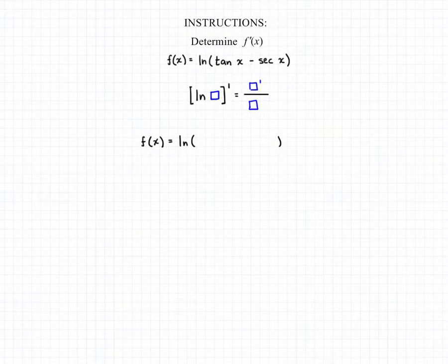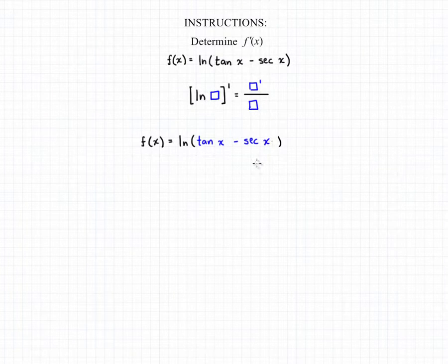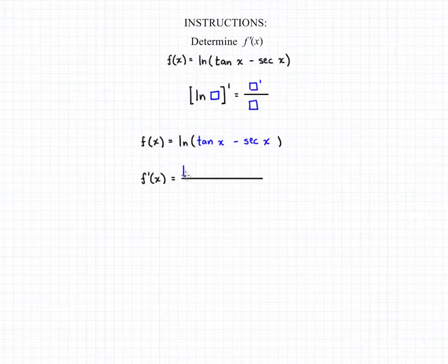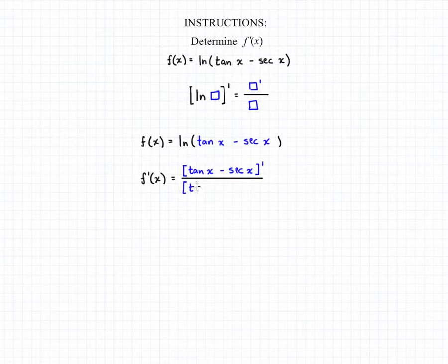Our function f of x was equal to the natural log of the tangent of x minus the secant of x. So to find the derivative, f prime of x, we can take that inside function, take the derivative of that — the derivative of tangent of x minus secant of x — place that in the numerator, and in the denominator place that original inside function, just the tangent of x minus the secant of x.